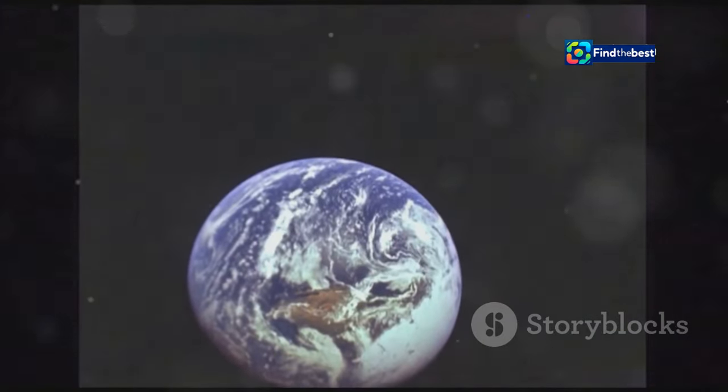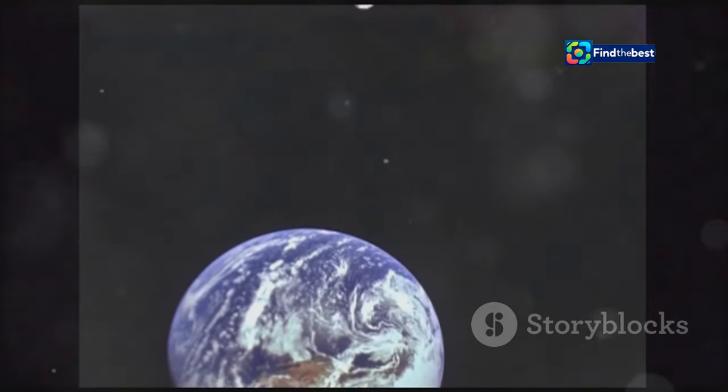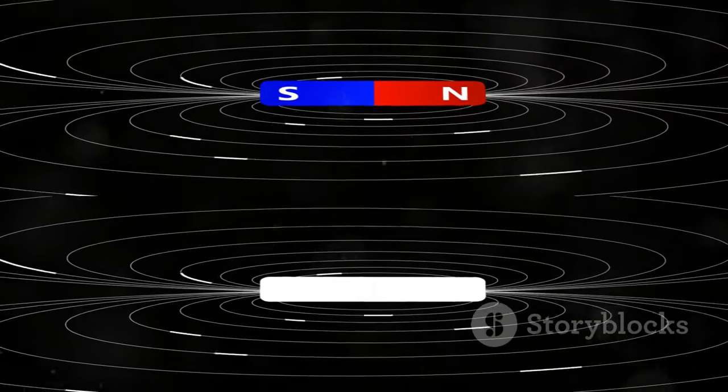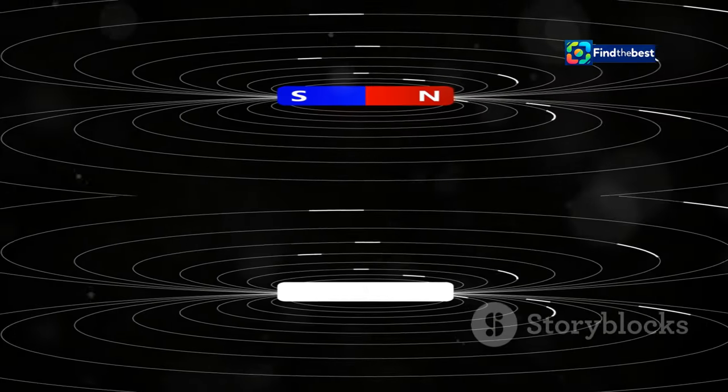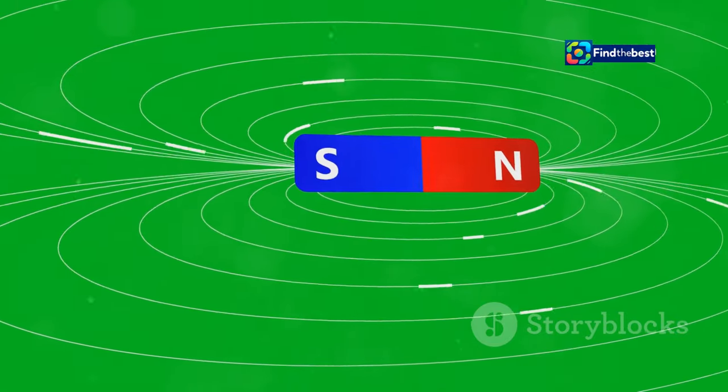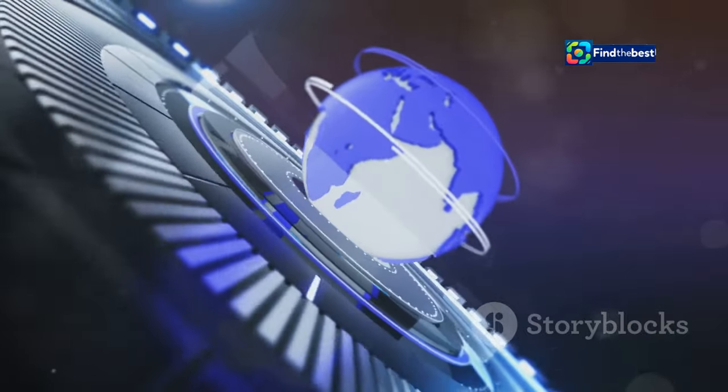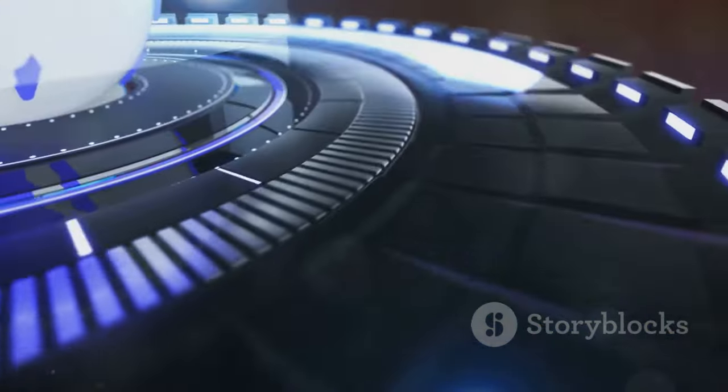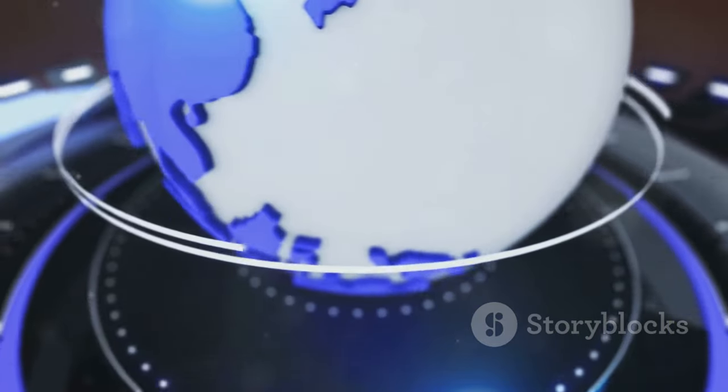Without the magnetic field, life on Earth as we know it would not be possible. The magnetic north pole is the point on Earth's surface where the magnetic field lines converge vertically. It's not a fixed point and is constantly on the move. In recent decades, its movement has accelerated.